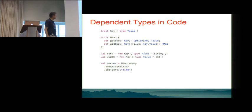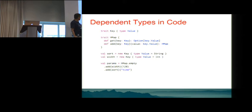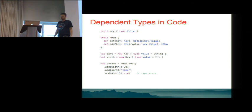Here's some code using HMaps. We have a SortKey whose value is a String, and a WidthKey whose value is an Int — essentially command-line arguments. We set up a command line as HMap.empty, add a width of 120, and add a sort option parameterized with "time". If you tried to add a width with a Boolean, that would give a type error. That's the principle of path-dependent types.